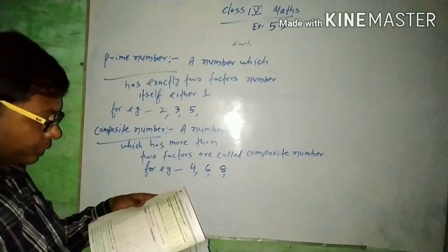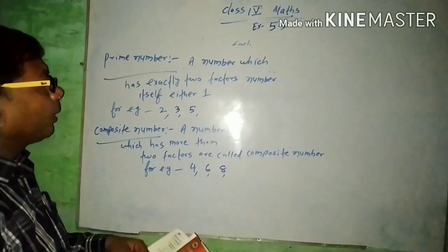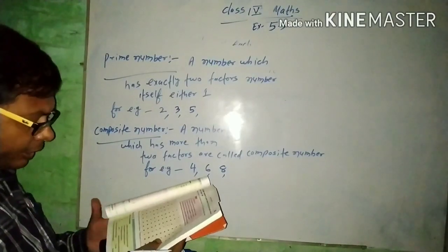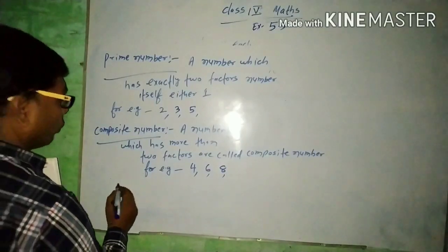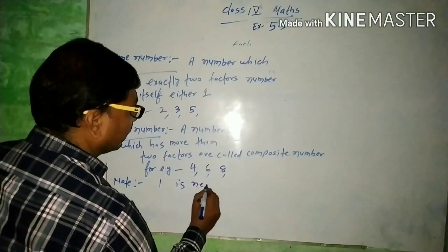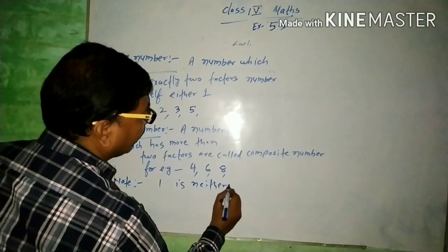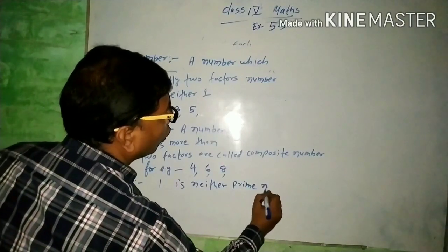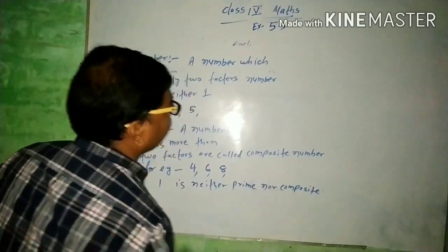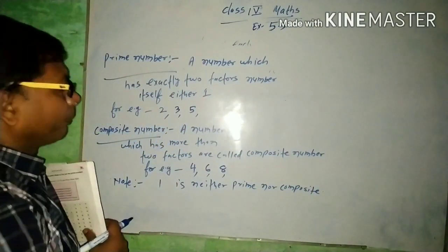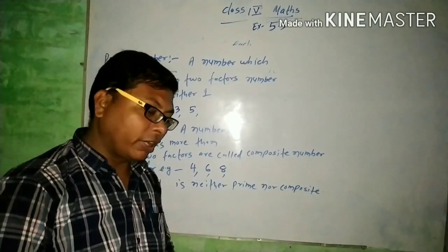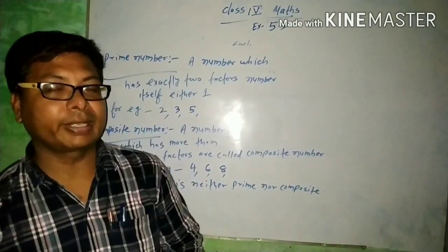There are three chapters of exercise: 5.3, 5.4, and 5.5, which is theory-based. One important note: 1 is neither prime nor composite. Complete this exercise unit and you need to have chapter 5 complete. In the next video, we will cover common factors and common multiples. Thank you.